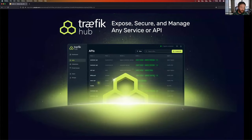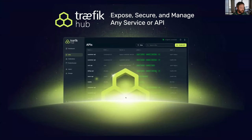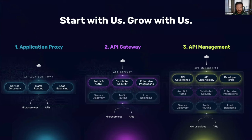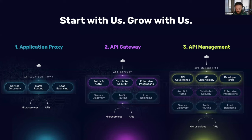Traefik Hub is a superset of the Traefik open source project, focusing on exposing, securing, and managing all your services and APIs. It has a strong focus on the API market. Its great differentiator is that it grows with you — starting from exposing your application, through your API journey from application proxy to API gateway, with authentication, authorization, up to full API management including governance, observability, and a developer portal.